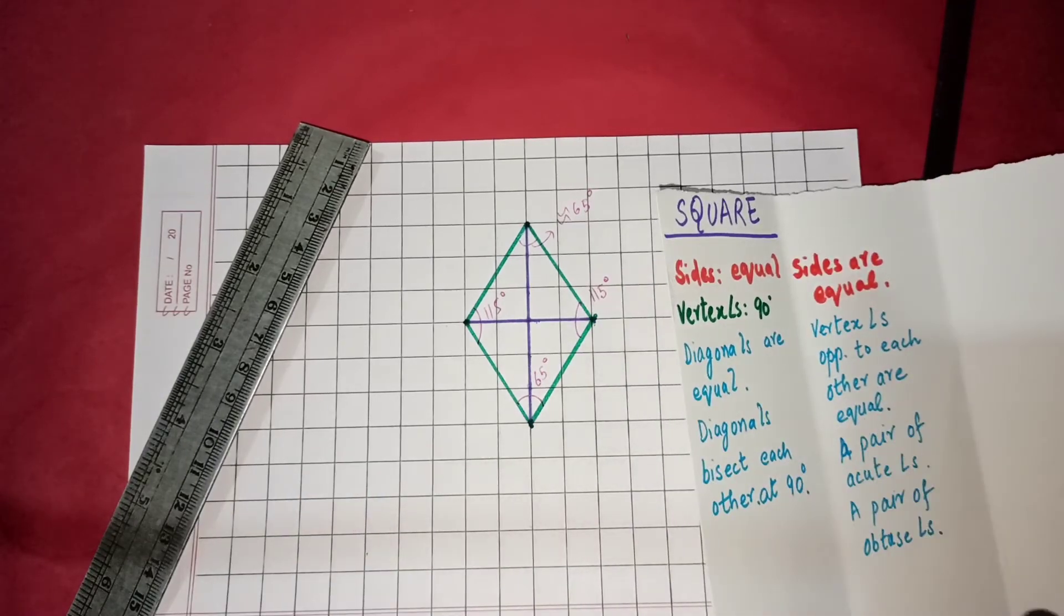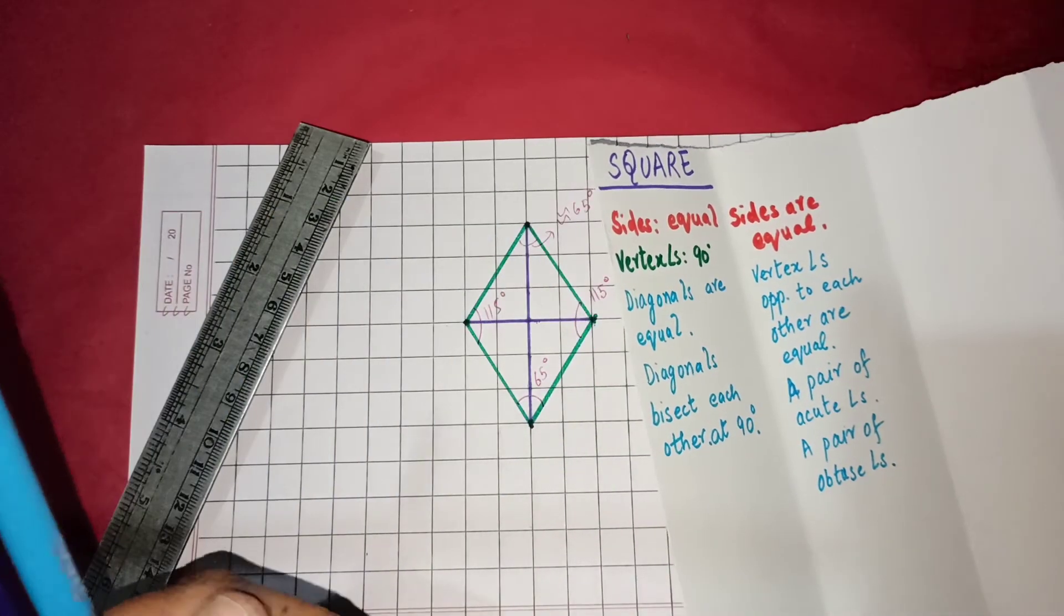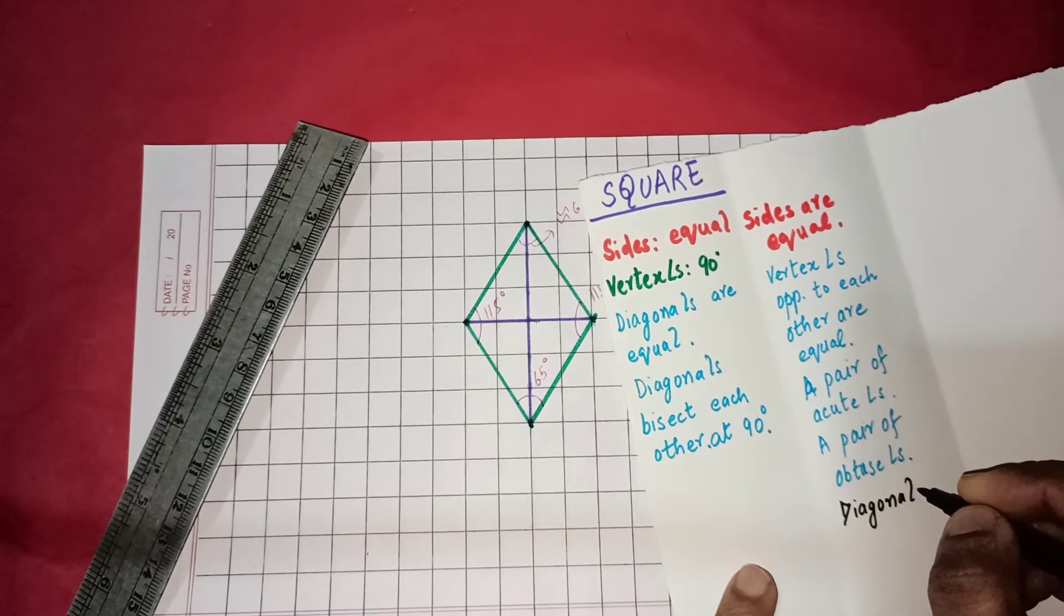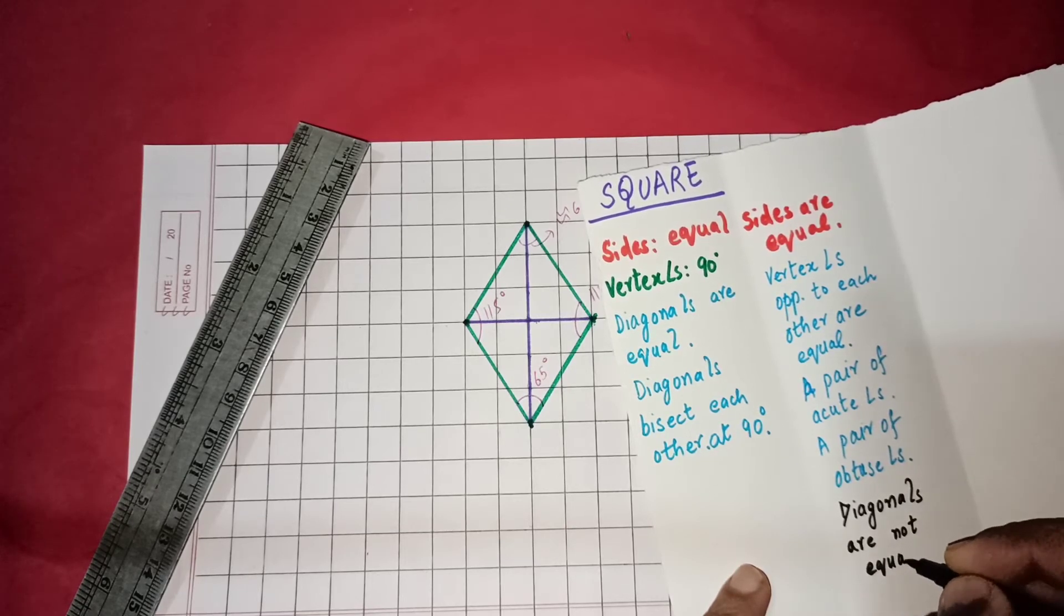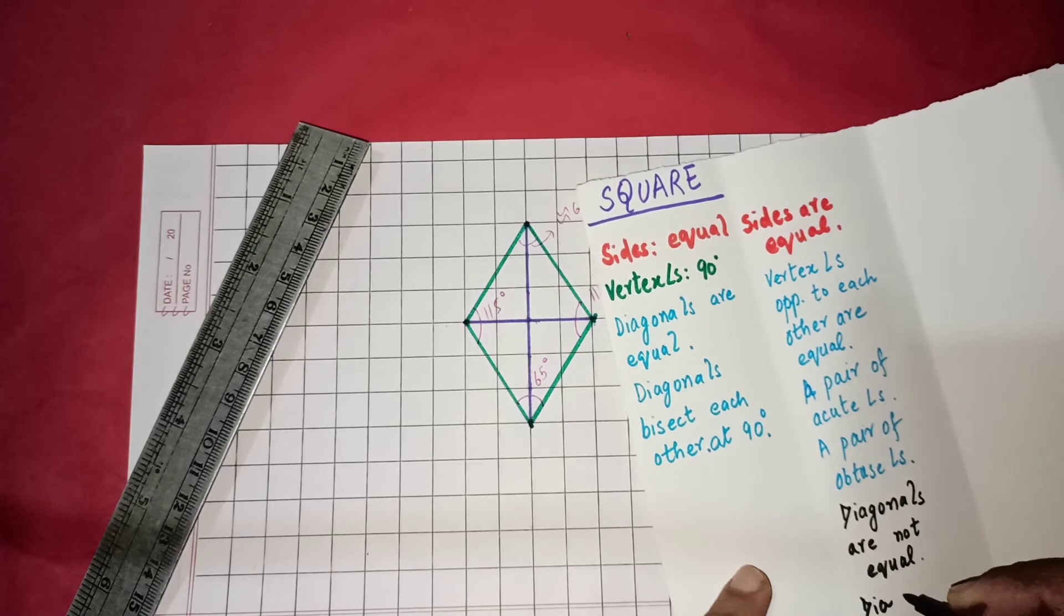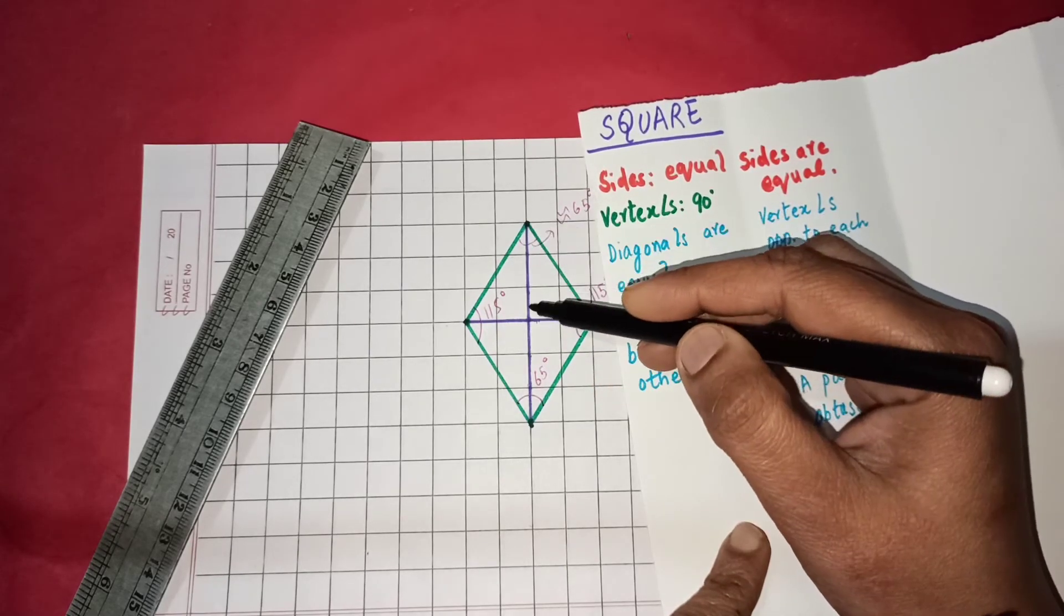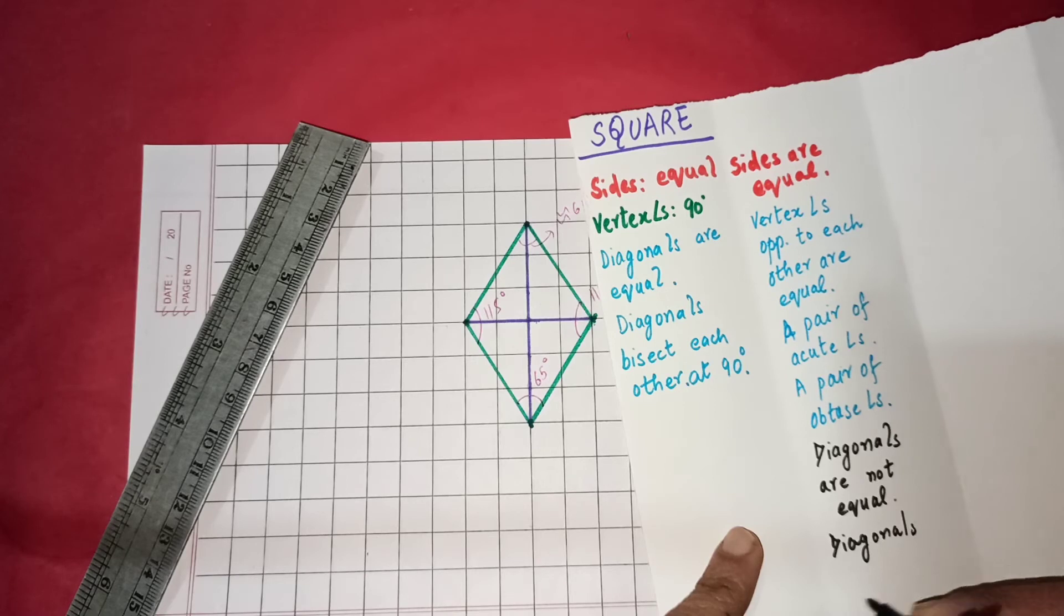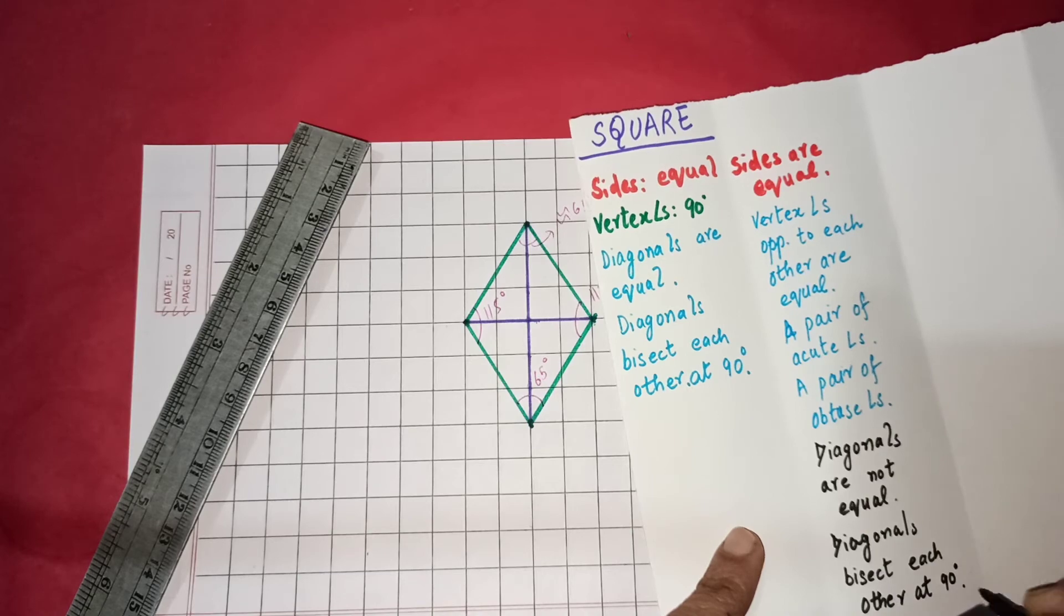Now let us talk about the diagonals. Because we began by drawing the diagonals only and we already know that the diagonals are not equal. Diagonals are not equal. But the diagonals bisect each other. See they are cutting each other at 90 degrees. Two this side, two this side, three this side, three this side. So they are bisecting each other. Diagonals bisect each other at 90 degrees or right angles. You can see here.